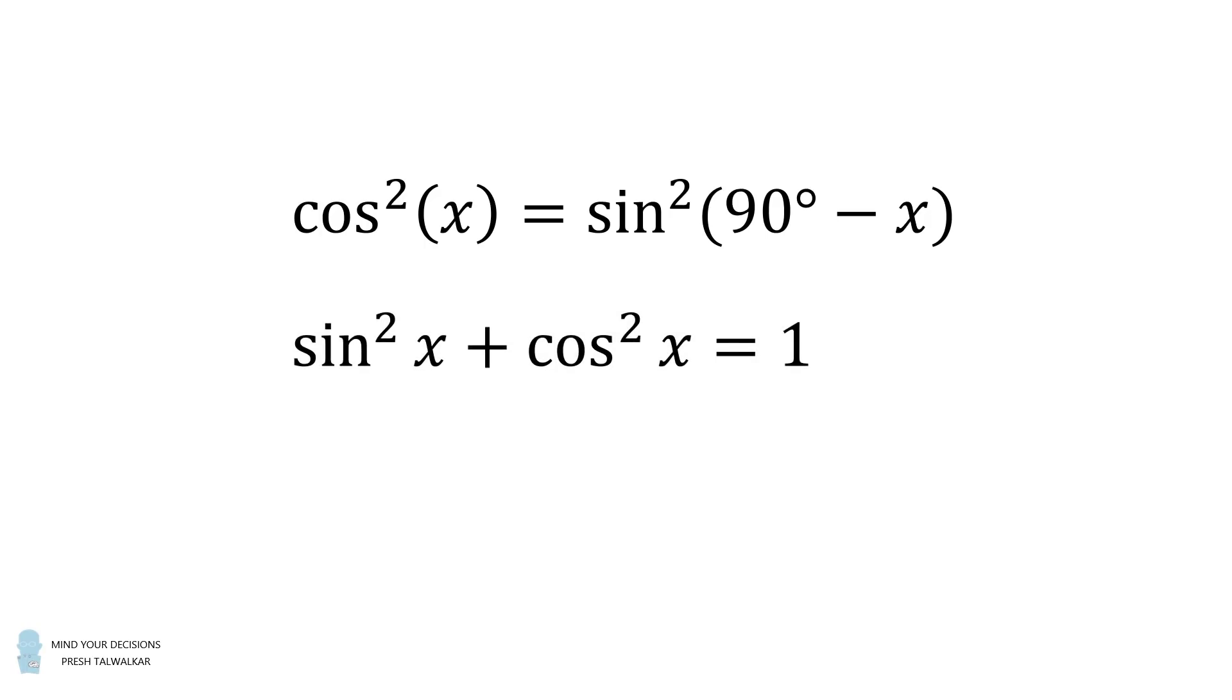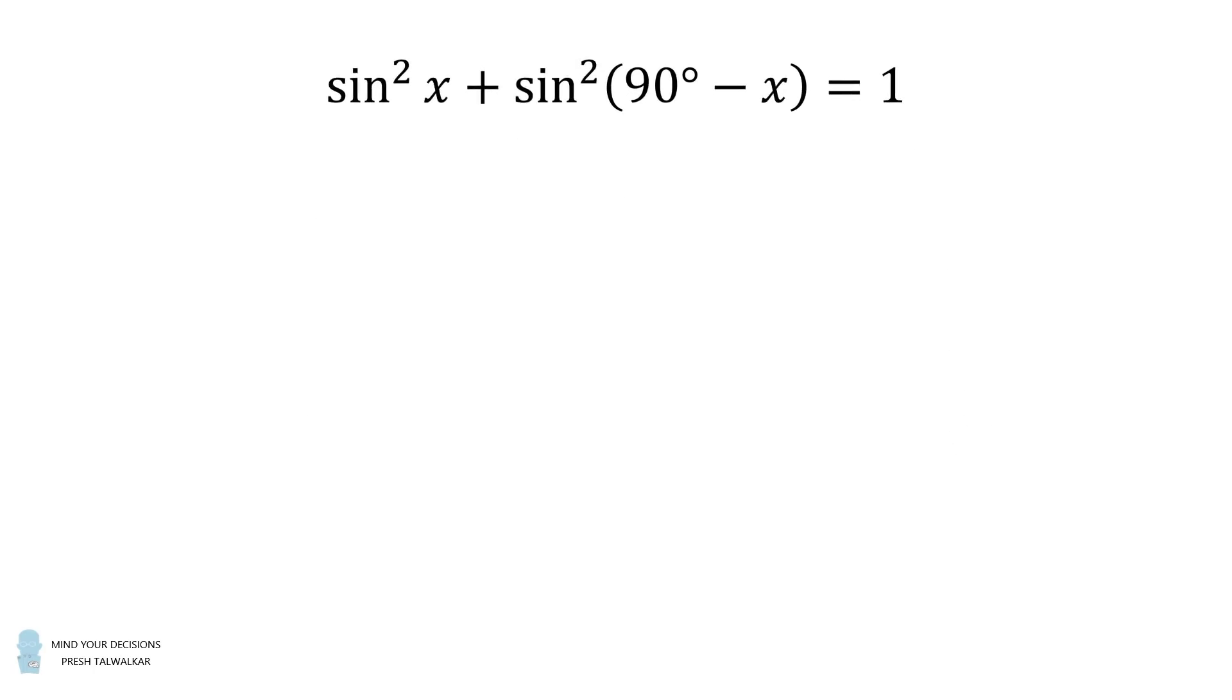Next recall, sine squared x plus cosine squared x is equal to 1. Substituting for cosine squared x gives sine squared x plus sine squared of 90 degrees minus x is equal to 1. We will use this identity to solve the problem.